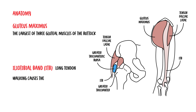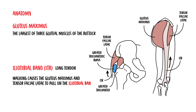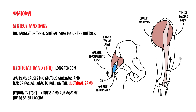Walking causes the gluteus maximus and tensor fasciae latae to pull on the iliotibial band. If the tendon is tight, it will start to press and rub against the greater trochanteric bursa, leading to bursitis — inflammation of the bursa.